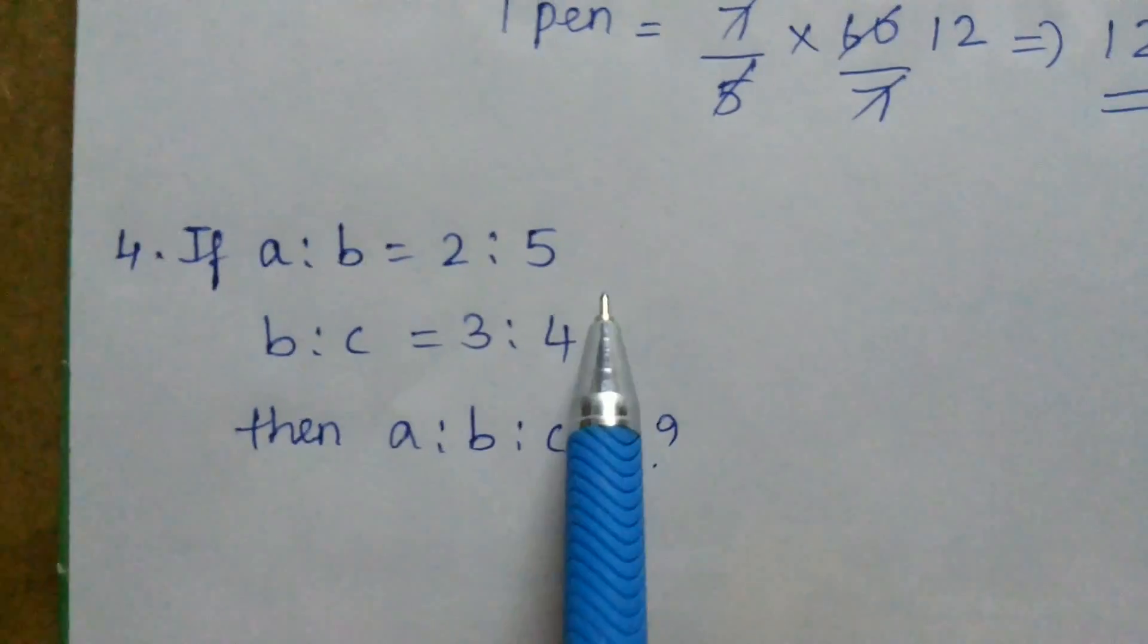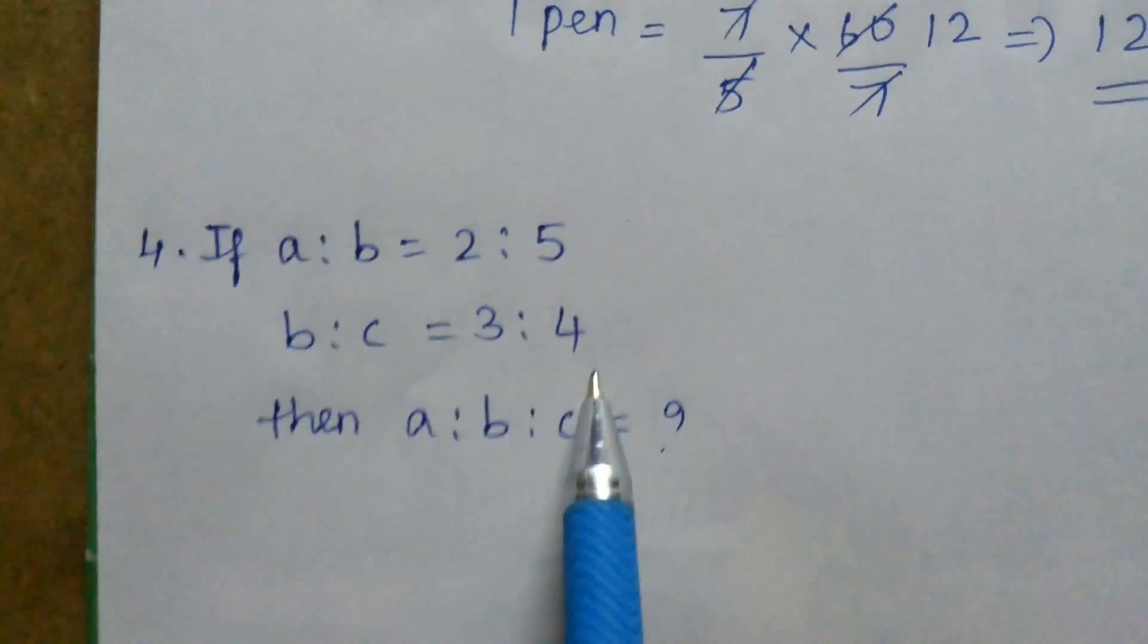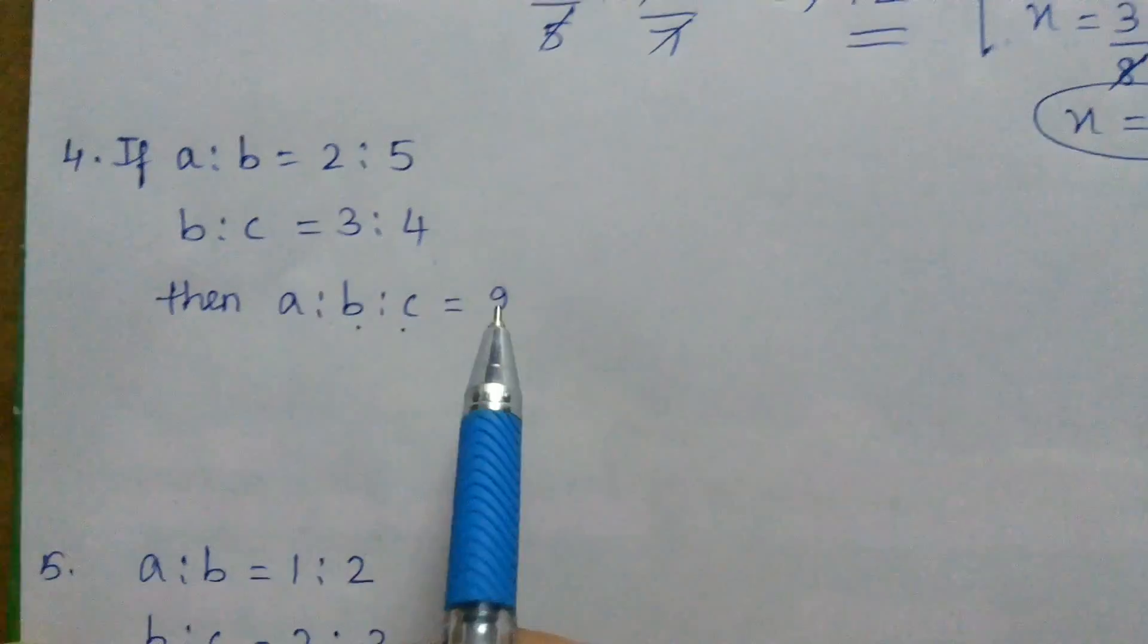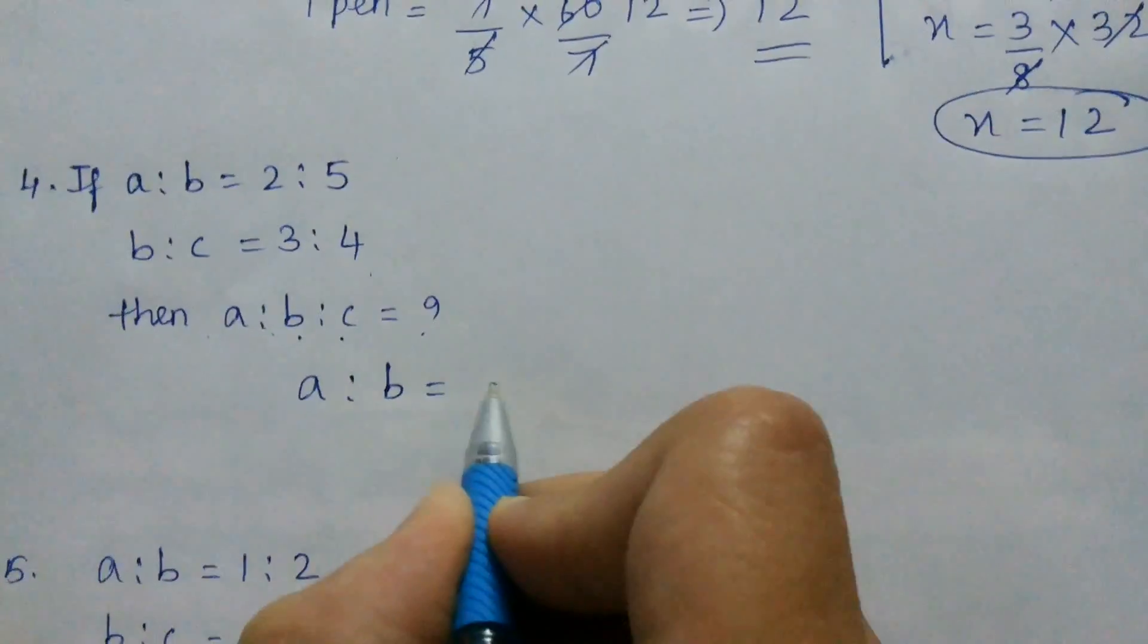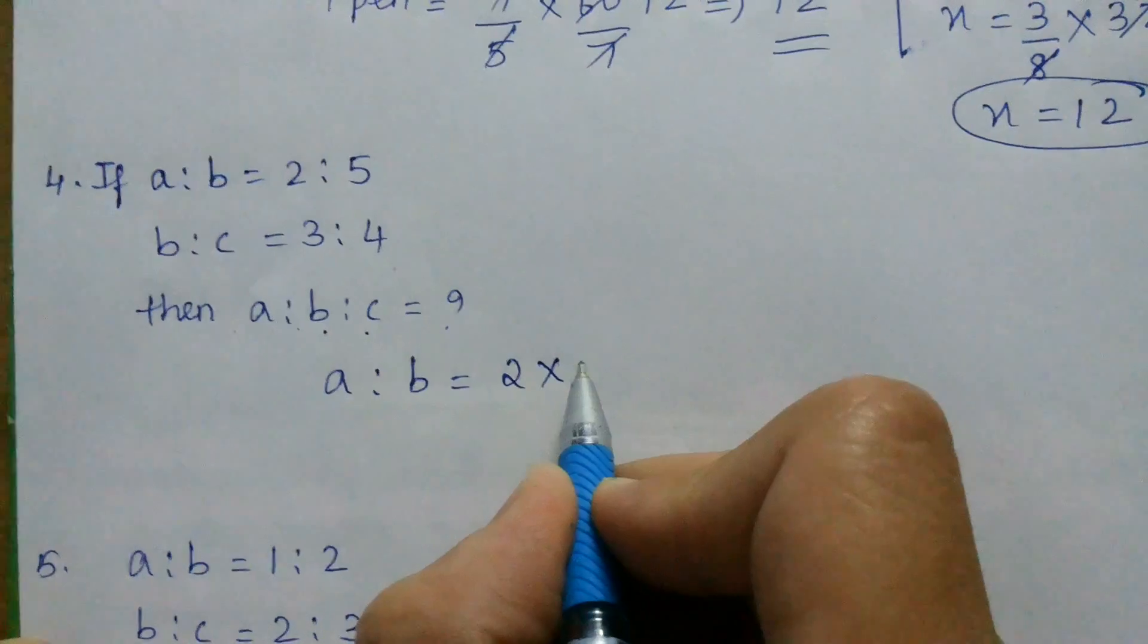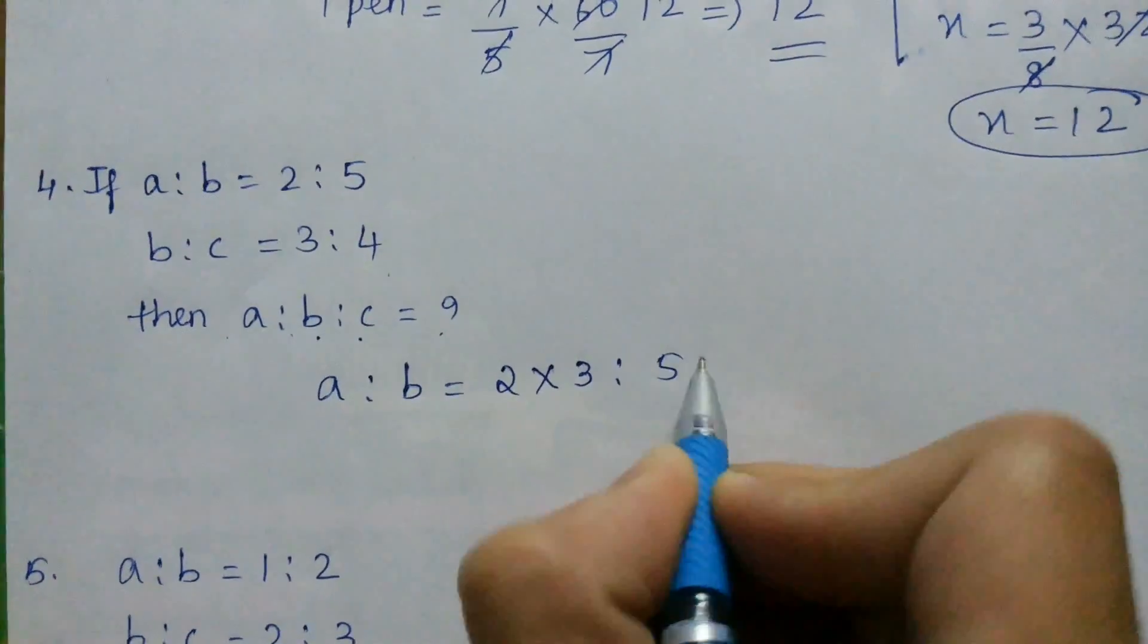A is to B is equal to 2 is to 5. B is to C is equal to 3 is to 4. Then A is to B is to C is equal to how much? Normally we multiply like this. A is to B is equal to 2 into 3 is to 5 into 3.